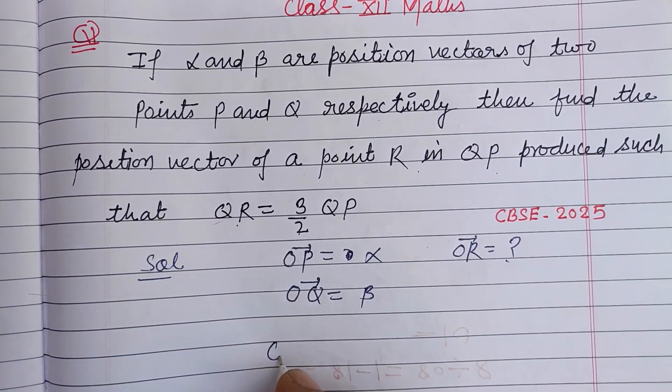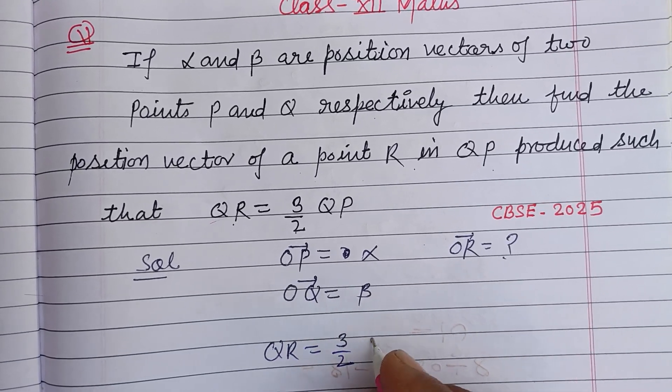The given condition is QR equals three by two QP.